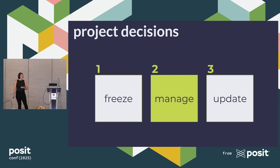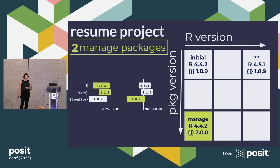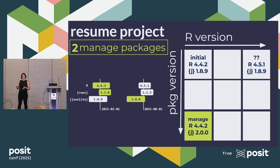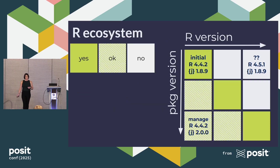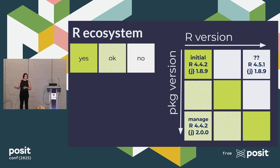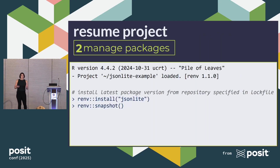Let's talk about the manage decision. I'm calling it manage when I want to maintain my R version of 4.4.2 but advance to JSON Lite 2.0 to use the latest and greatest. Remember, this is an okay place to be in the R ecosystem. It's pretty simple: I would do install of JSON Lite and then snapshot to record that to my lock file.